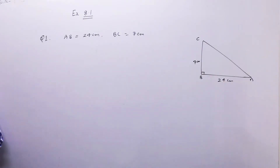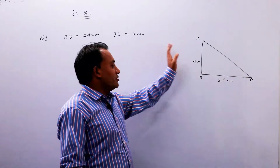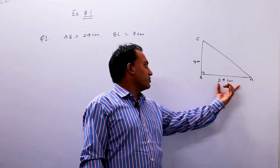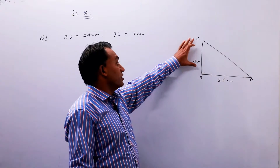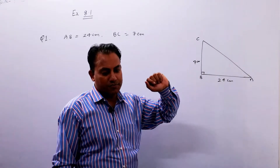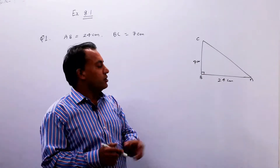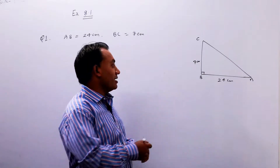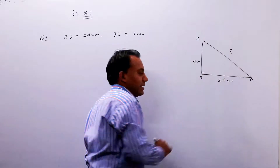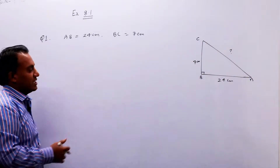अच्छा, figure देखें — right angle B पर है। AB यहाँ 24 cm है और BC जो है 7 cm है। जब भी आपको trigonometric वाले questions करने हों, तो इस बात का ध्यान रहे कि हमें third side पता होनी चाहिए, है न, जो कि यहाँ पता नहीं है।